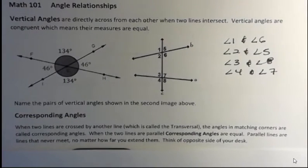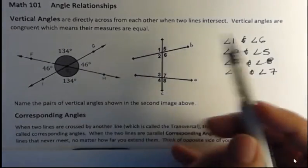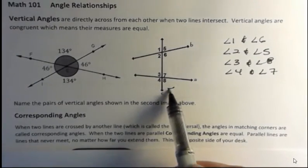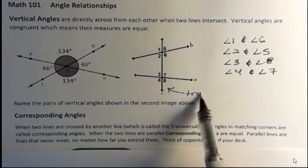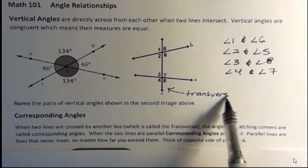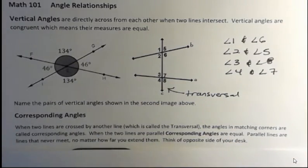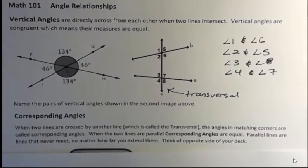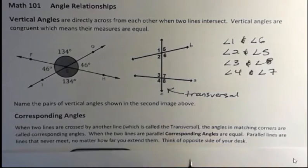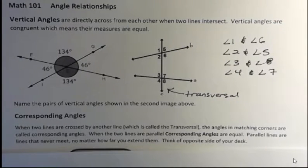Corresponding angles: when two lines are crossed by another line, which is called a transversal — in this picture up here, C is the transversal — the angles in matching corners are called corresponding angles. When the two lines are parallel, the corresponding angles are equal, meaning they're congruent and have the same measure.